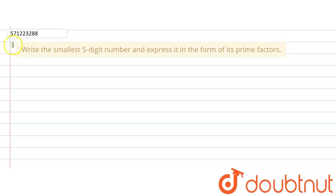The given question says: write the smallest five-digit number and express it in the form of its prime factors.